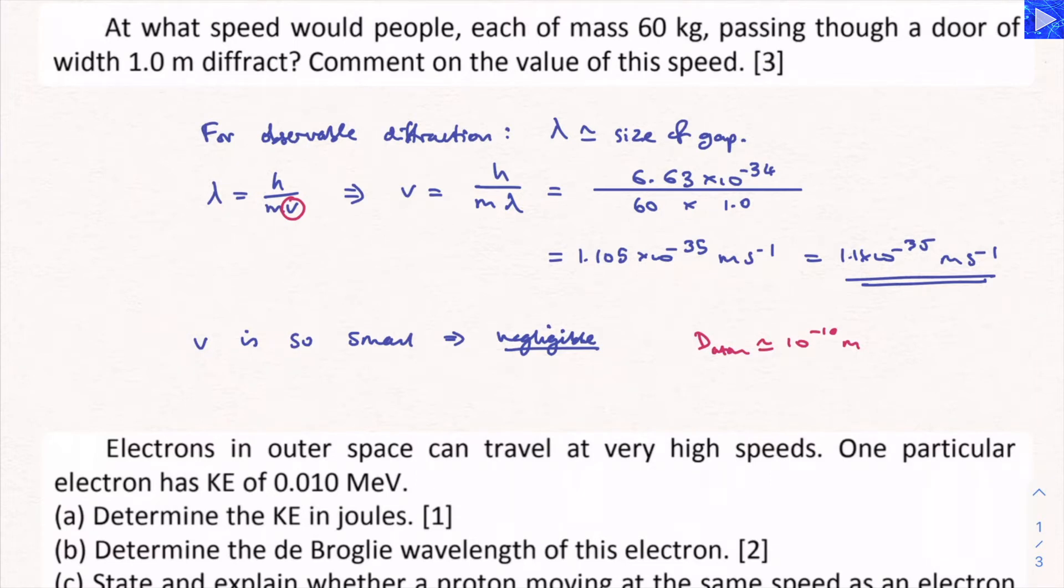So if I write that D proton is about 10 to the minus 15 meters, you're even a tiny fraction of a proton per second. So this is so small, so slow that it's negligible. You're stationary. So you can't have people diffracting through a doorway. It's not possible.